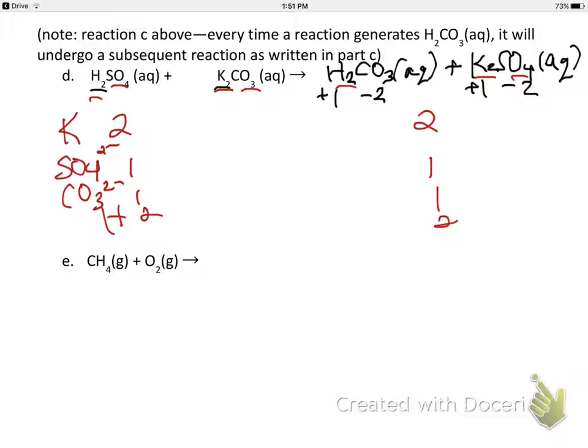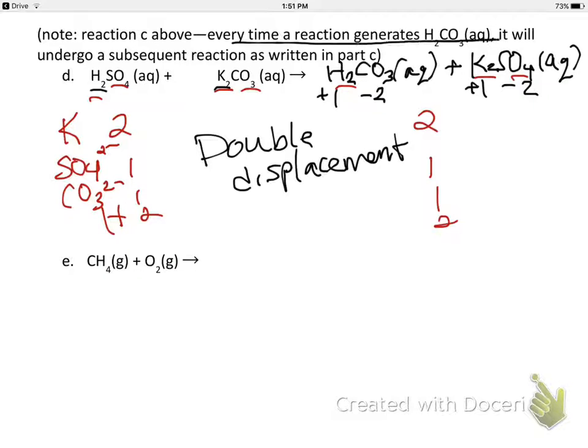Actually in the prior problem, I forgot to write that this was a double displacement. Oh, and we're not quite done because there's a little hint up here. Let's see what this says. It says every time a reaction generates H2CO3, it will undergo a subsequent reaction as written in part C. Okay, okay, we made H2CO3.